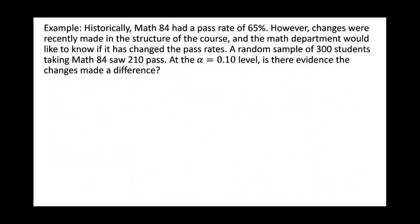The example we had started with: a class had a pass rate of 65% at one point, changes were made, and the department wants to know if the pass rate has changed. We set this up as a two-tailed test with a not-equal-to alternative, because we were interested in both directions — whether it went up or down.